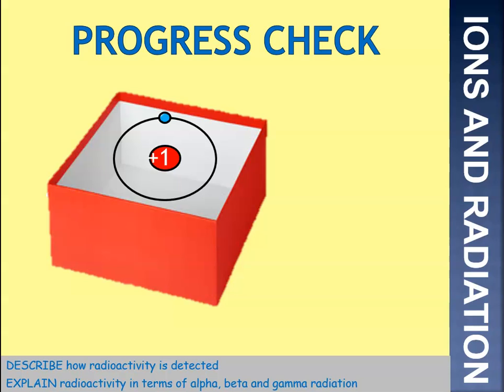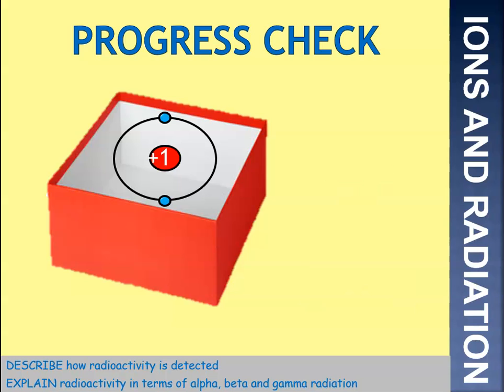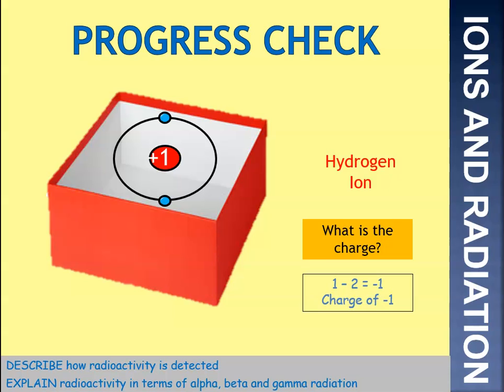Let's work these out. We have a hydrogen atom — it's got one proton, one positive charge in the centre, one electron. One positive take away one negative gives us no charge overall. What about a hydrogen ion? One proton, two electrons. One positive take away two gives us a charge of minus one, so overall the charge is minus one.